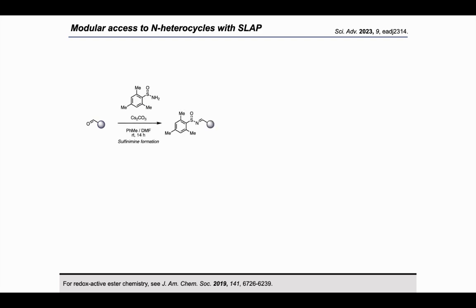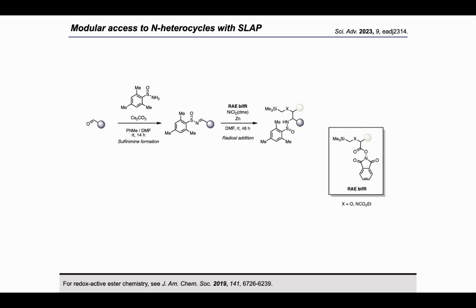Starting from an aldehyde or ketone, we form the sulfenamide, which is then in the next step — without purification — reacted with a bifunctional reagent. We can draw this as the redox-active ester; we also have a tin-based version. Both have in common a tin or redox-active ester group that can form a radical, and that radical undergoes radical addition with the imine to reveal another sulfenamide.